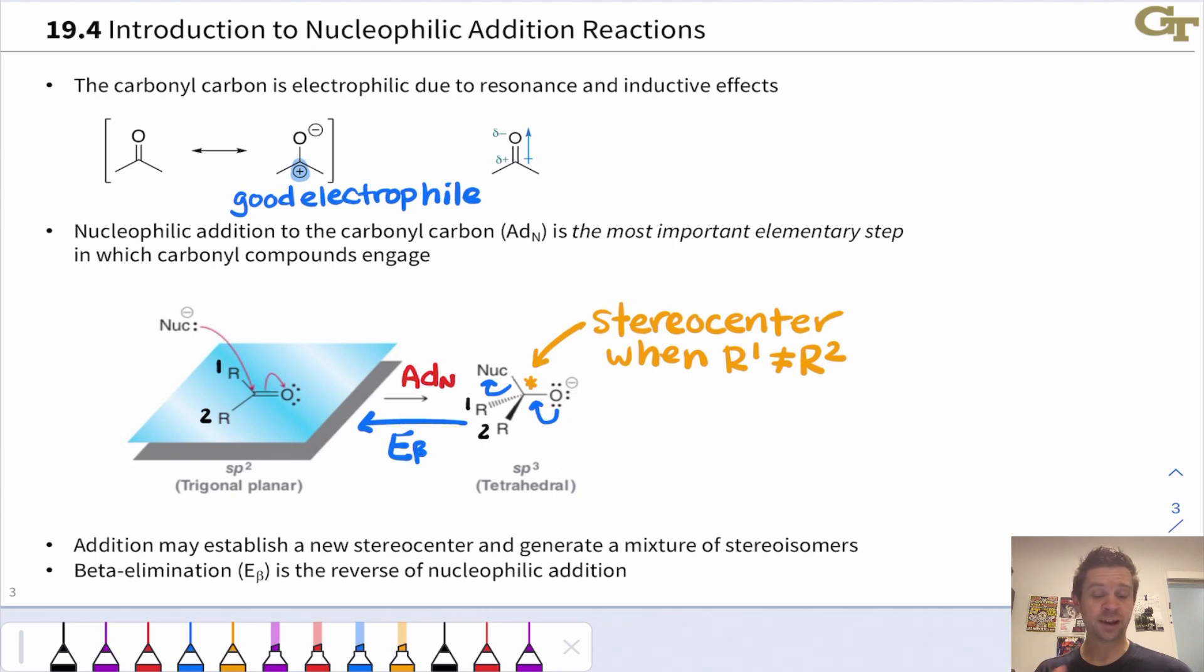We'll quite often see this alkoxide intermediate doing further reactivity. Under acidic conditions, the oxygen may be protonated from the get-go. But this basic idea of the nucleophile adding to the carbonyl carbon is the most important elementary step in which carbonyl compounds engage.